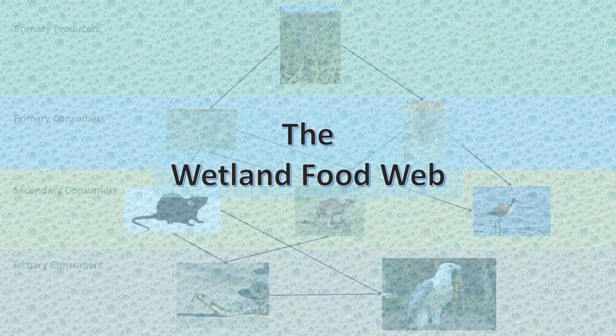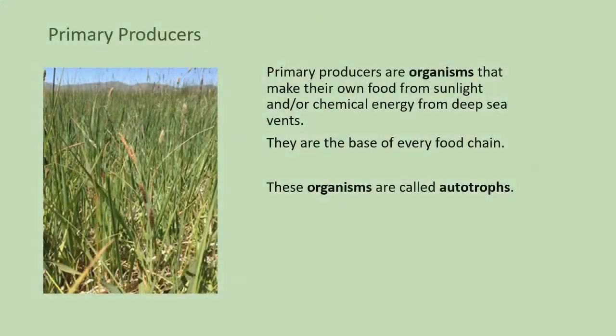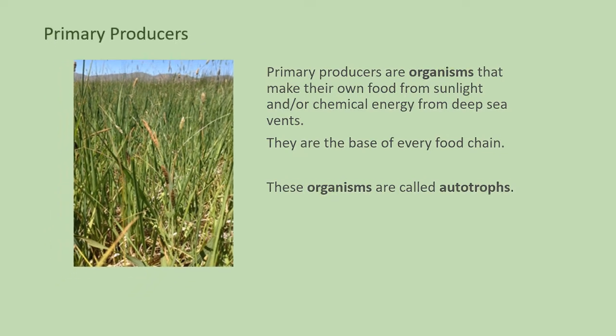The wetland food web. Primary producers are organisms that make their own food from sunlight and chemical energy from deep sea vents. Primary producers sit at the first level of the food web.